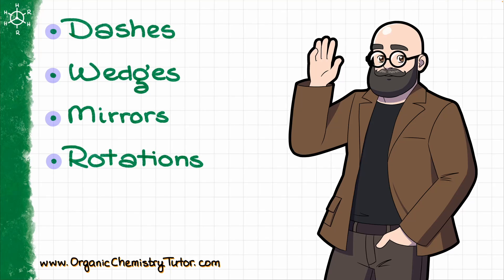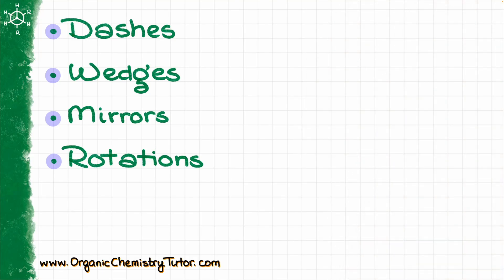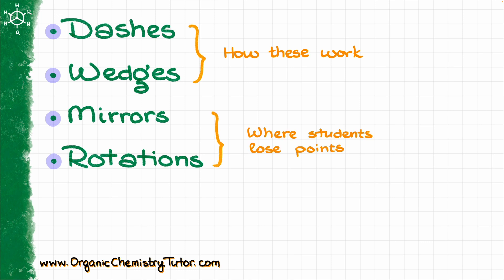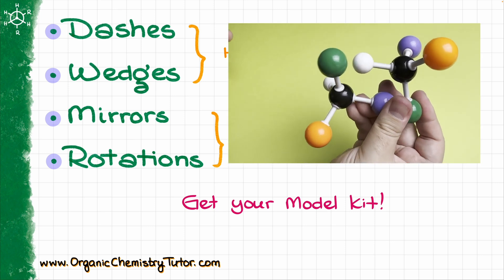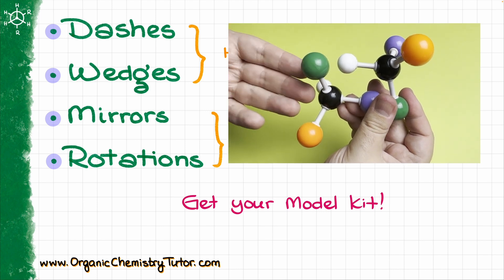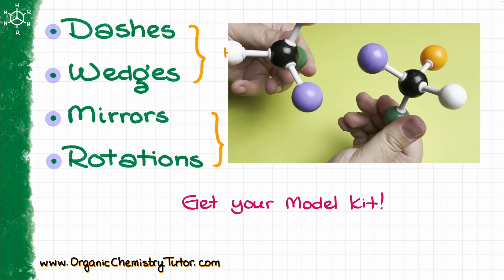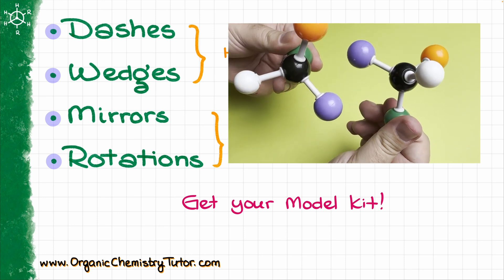Hey everyone, Victor is here, and in this video I want to talk about the dash and wedge notation and the most common issues that many students experience when it comes to molecular rotations and making mirror images of various molecules. If you have your molecular model kit, you might want to pause this video and grab it, because you'll probably need a couple of molecular model kits where you have a carbon and some other colored atoms to signify different groups.